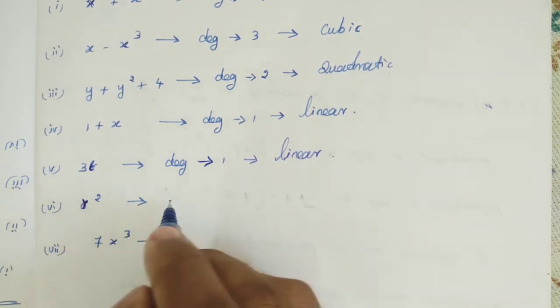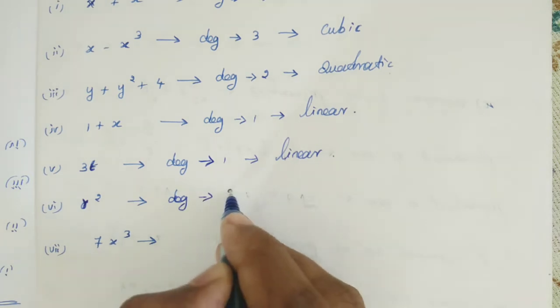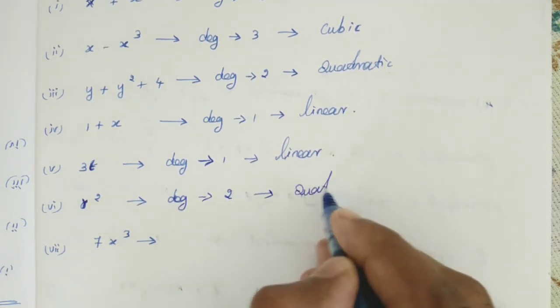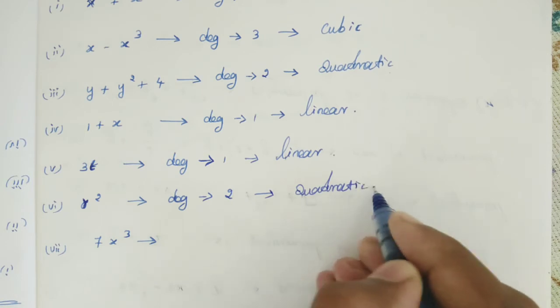Next step. R square. R square. Degree 2. So it is quadratic. Quadratic polynomial.